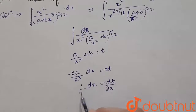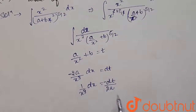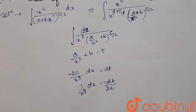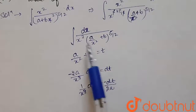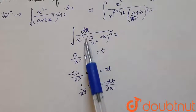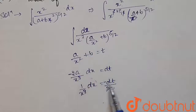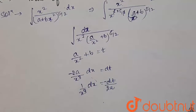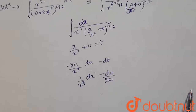So 1/x³ · dx = minus dt by 2a. We substitute dx/x³ as minus dt/2a, and our integration becomes the integral of minus 1/(2a) times dt/t^(5/2).